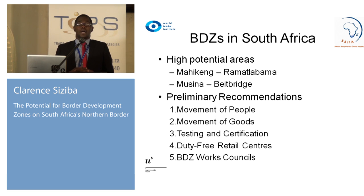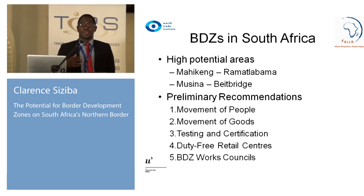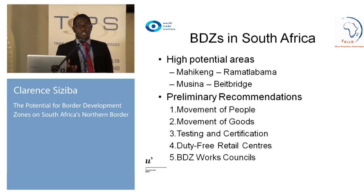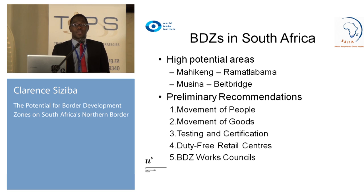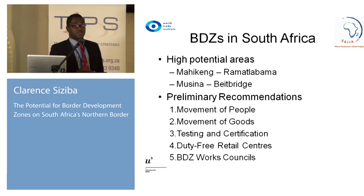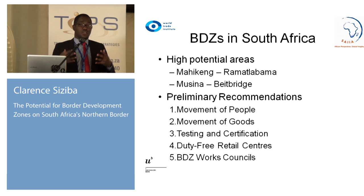Our preliminary recommendations for how the border development zones should operate: there should be easier movement of people — the lessons from the international examples are useful, and the uni-visa that Zimbabwe and Zambia have implemented is brilliant as a testing ground. Movement of goods would also be beneficial, along with testing and certification of agricultural produce across the border and duty-free retail centers. In terms of public-private partnerships, we recommend border development zone works councils including customs people, immigration authorities, traders, and business people, so they can work together to determine how the border functions.